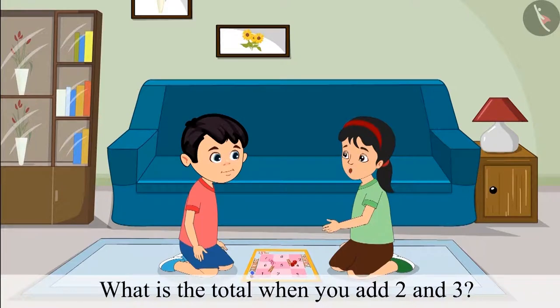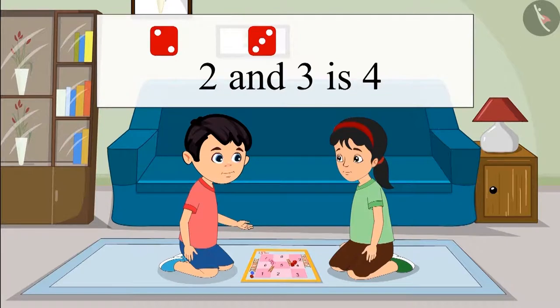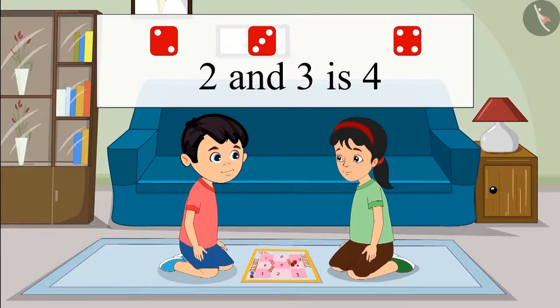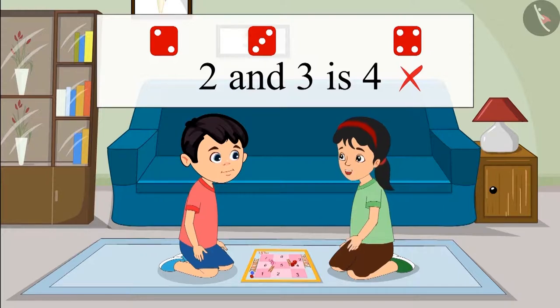Chotu, what is the total when you add 2 and 3? When we add 2 and 3, we get 4. This is incorrect, Chotu. Think again and explain how did you count.